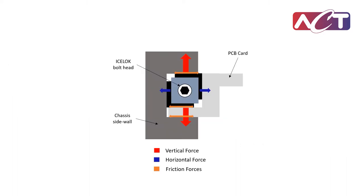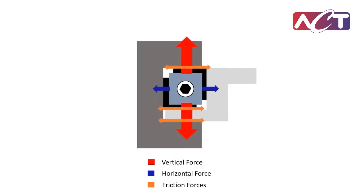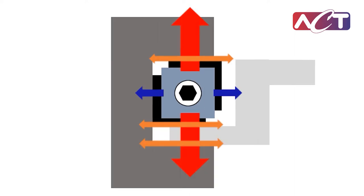The ice lock is designed so that the vertical clamping force is the largest force generated. This vertical force generates friction forces in the horizontal directions. These friction forces are greater than the horizontal force generated by the ice lock, thereby preventing the cart or chassis from moving.